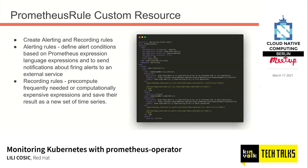Next up is the PrometheusRule, used to create alerting and recording rules. Alerting rules are evaluated by Prometheus to determine when you should be paged about your workload — always make sure your alerts are simple and not too many, and always alert on symptoms, not causes. Recording rules allow you to pre-compute frequently needed or expensive expressions, saving their result as a new time series to reduce compute overhead.